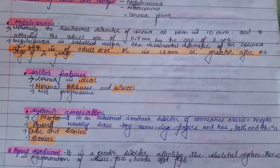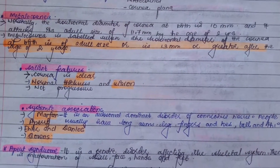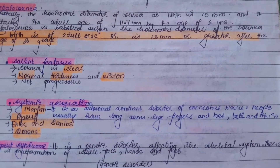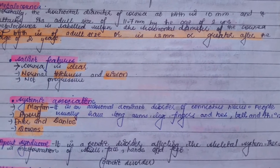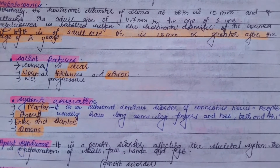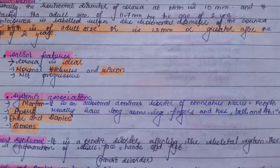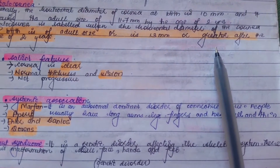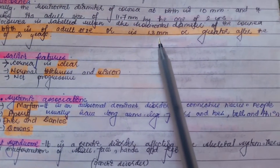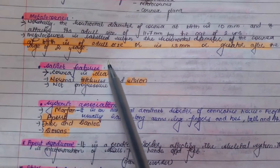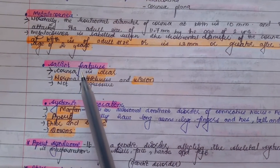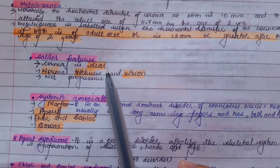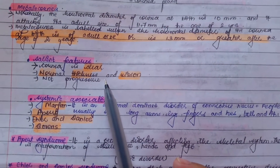The cornea is said to be megalocornea when the horizontal diameter at birth is already of adult size — that is, 11.7 millimeters — or when by the age of two years it attains a size of 13 millimeters or greater. The salient features of megalocornea are that the cornea is clear, has normal thickness and vision, and is not progressive.